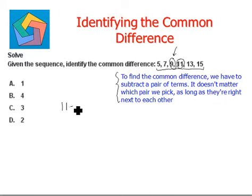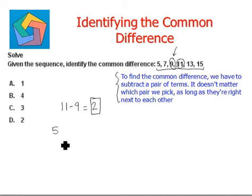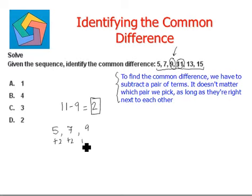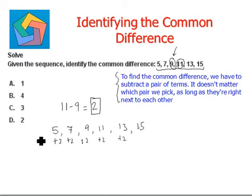11 minus 9 equals 2, so 2 is our common difference. Let's verify: starting from 5, add 2 to get 7, add 2 to get 9, add 2 to get 11, add 2 to get 13, add 2 to get 15. The sequence matches the given one, so the common difference of 2 is correct — that is option D.